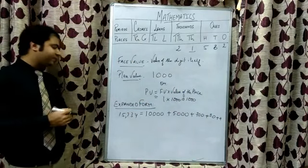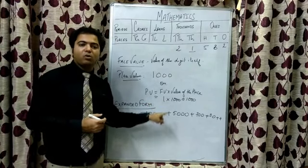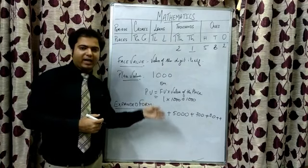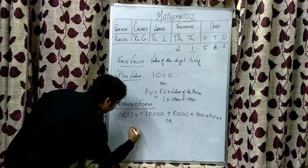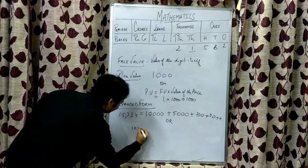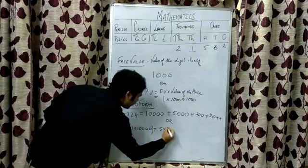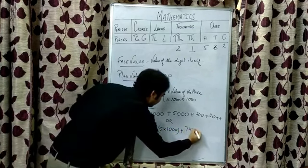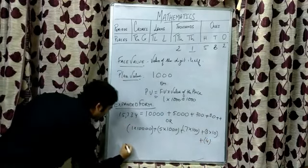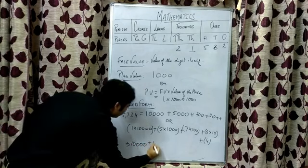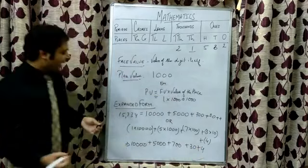In the exam, when a question is in expanded form, children mistakenly put a multiplication sign instead of addition and go wrong. So don't make this mistake. In your book, one more method is given: first take out the face value, then multiply it by the place value at which the digit sits, and then add. Ultimately you will get the same answer, and in an exam you can follow either of the two methods, whichever you find easier.